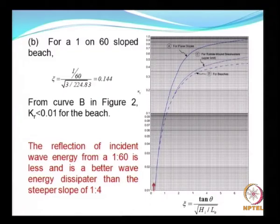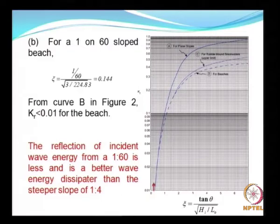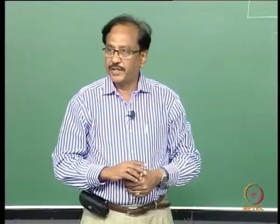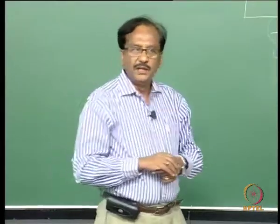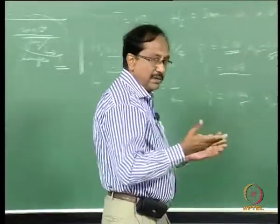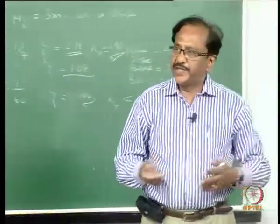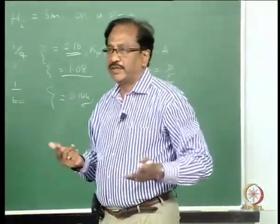If you have a rubble mound structure and use the nomogram as given, you are making a conservative estimate of the reflection coefficient. To arrive at a correct value closer to reality, you would need to carry out experimental investigations in the lab.